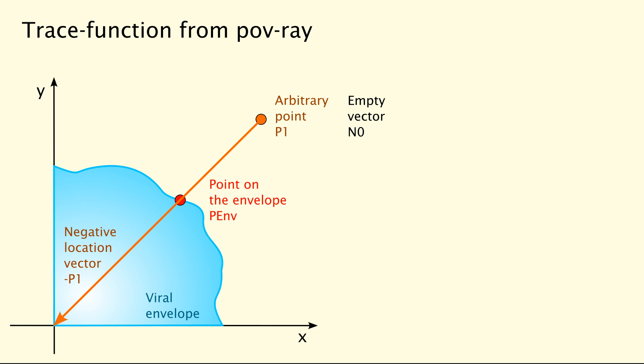These three vectors, the position vector, the negative position vector and the predefined empty vector for the normal are sufficient for trace to work. The function will give you two things as output. The precise location where the negative location vector is hitting the envelope and the normal vector of the envelope at this place.